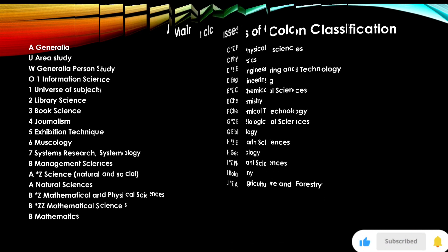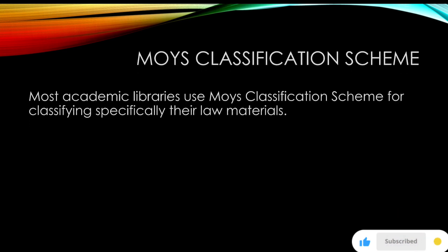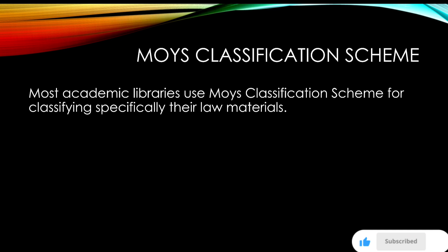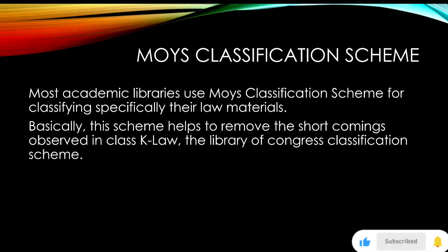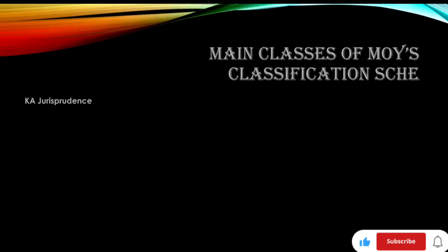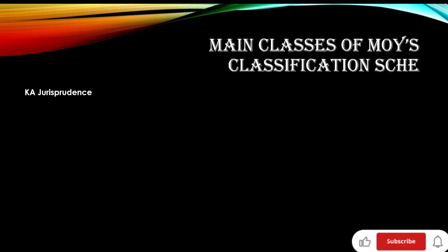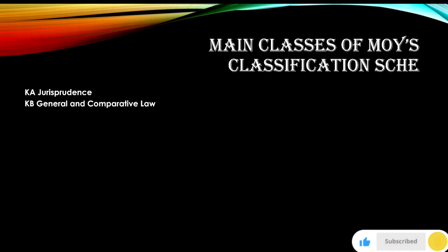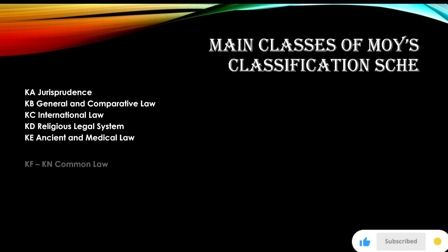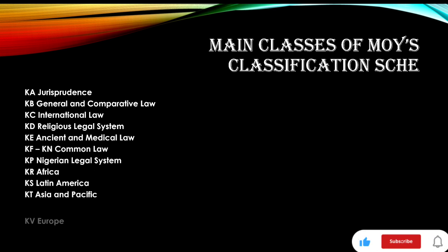Most academic libraries use the Moys Classification scheme for classifying specifically their law materials. This scheme helps to remove the shortcomings observed in Class K — Law — of the Library of Congress classification scheme. Main classes of Moys Classification include KA — Jewish Jurisprudence; KB — General and Comparative Law; and further classes as listed on screen.